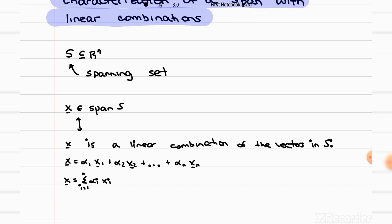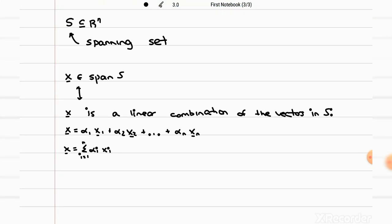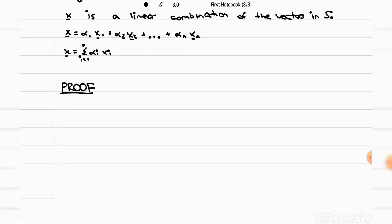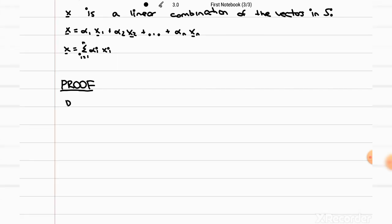So essentially we're saying that the vectors in a spanning set are basically the building blocks of the span, meaning that they're the vectors that you put together with linear combinations to get the span. And for the proof, it helps to first understand what a span actually is. The definition of a span says that a span is the intersection of all the subspaces that contain the vectors in S.